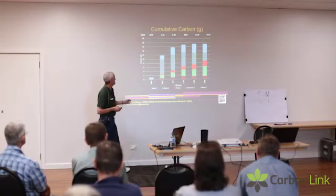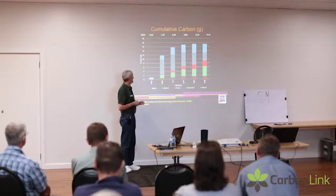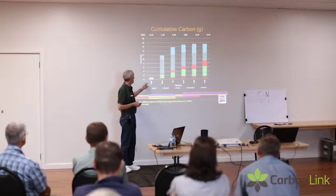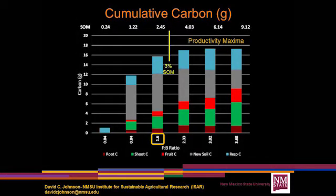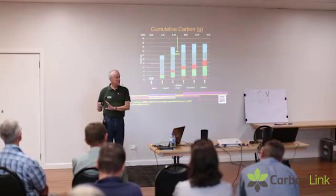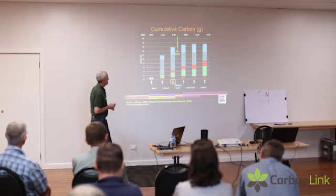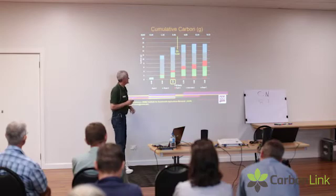Putting all this together, you can see the productivity and the amount of carbon that plant was able to capture. In a poor soil, the efficiency of carbon capture is low, but it improves every time you increase. You will reach a maxima, and that maxima starts at about 3% soil organic matter. This is an observation by many farmers and ranchers — once their soil hits 3% organic matter, they see a change in the dynamics of how a plant grows. Again, 1.6 on the fungal-to-bacterial ratio.